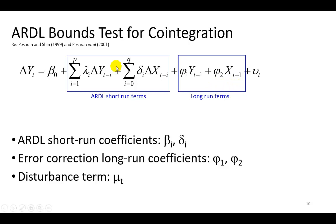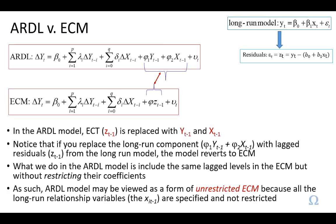Separately, we're also going to test the short-run coefficients, lambda and delta, to see if we can make an inference on short-run Granger causality between y and x in particular. And of course, the traditional disturbance term needs to be white noise.